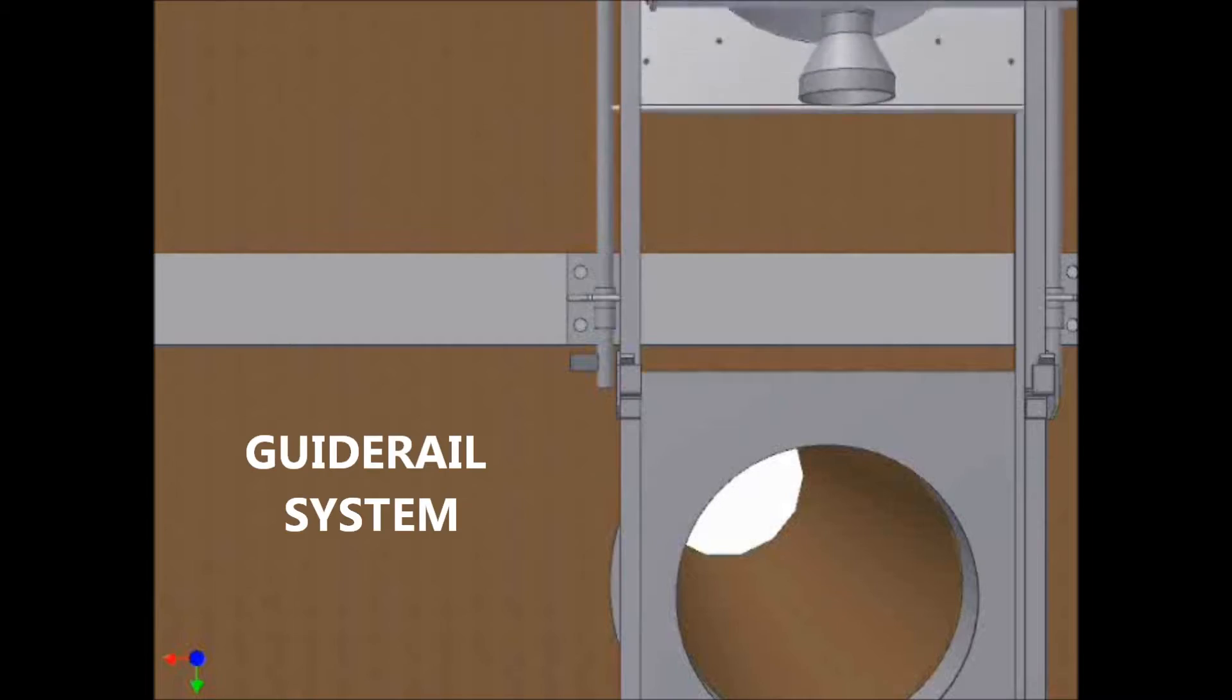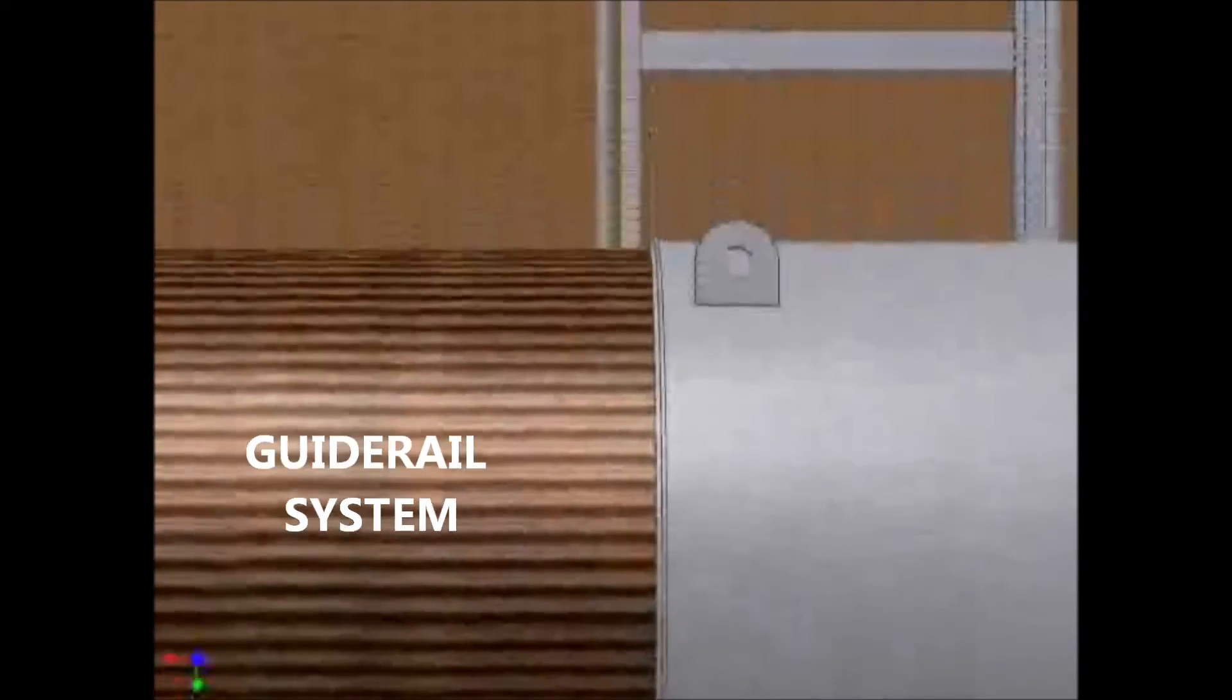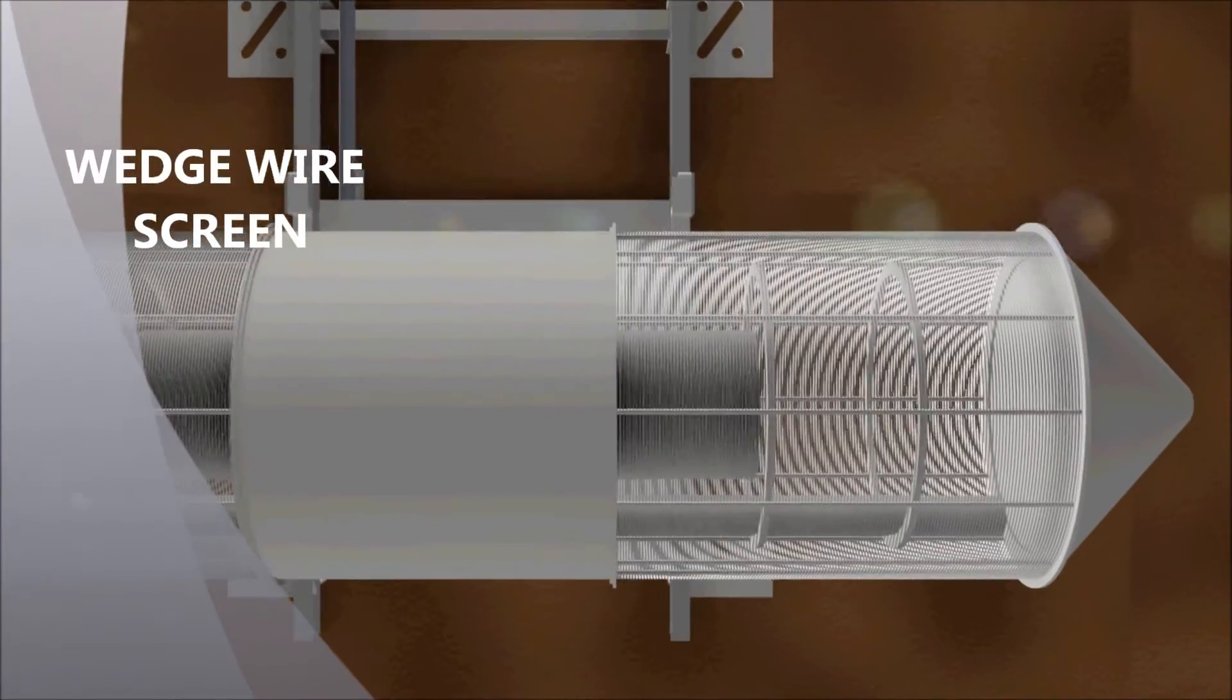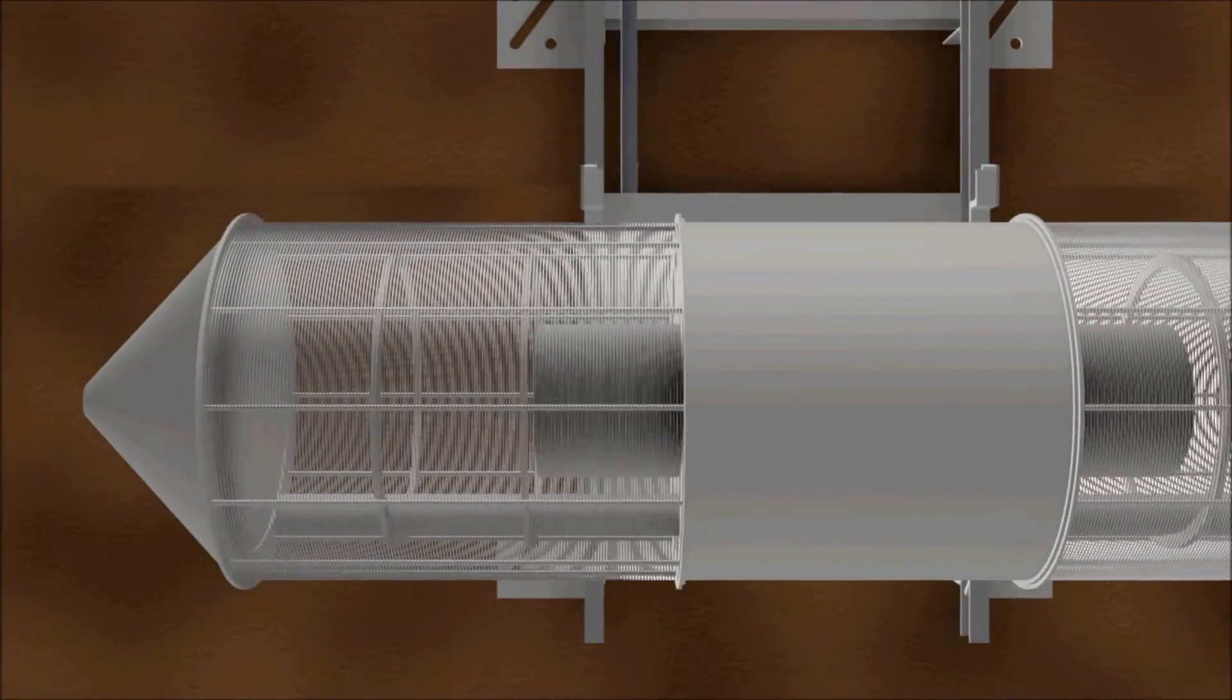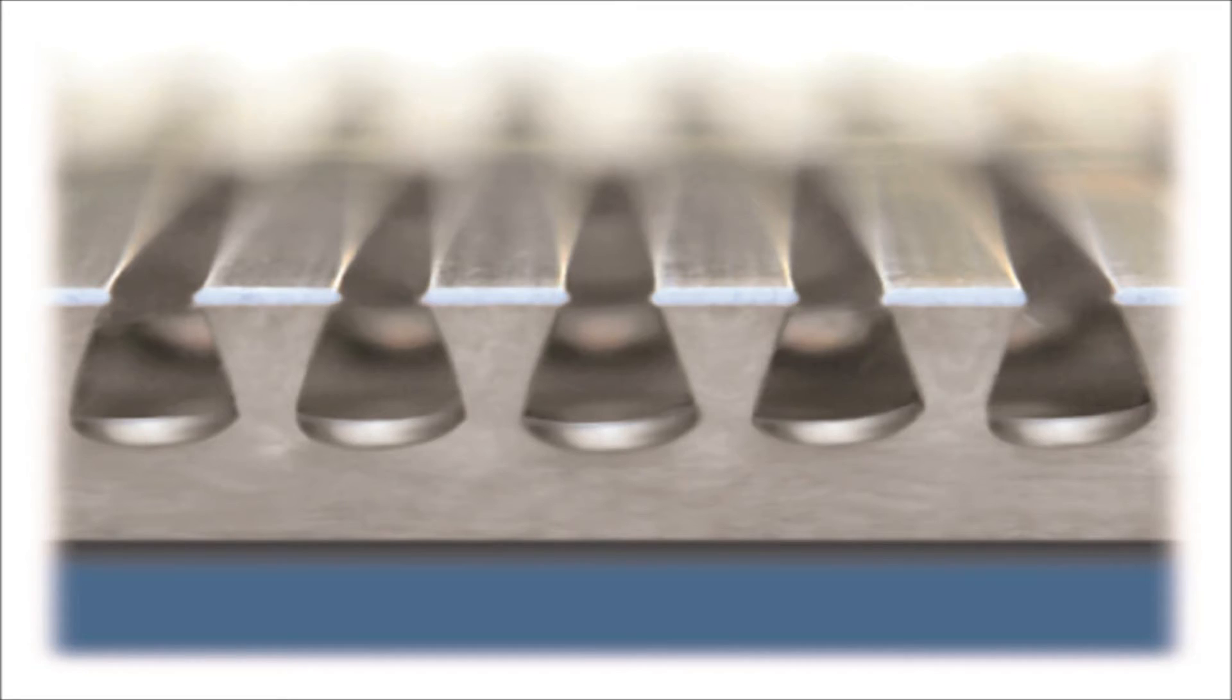A guide rail system can be used to install and retrieve a screen. We use wedge wire screens. The wire opens inwardly, providing a good relationship between filtration and head loss across the media.